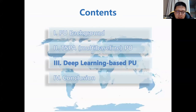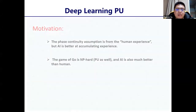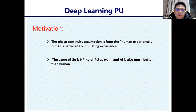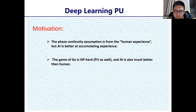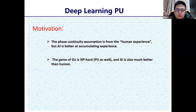Now the second advanced PU technique: deep learning-based phase unwrapping. The motivation is twofold. First, the phase continuity assumption comes from human experience, but AI is better at accumulating experience, so a DL network may provide a better alternative. Second, the game of Go is NP-hard, yet AlphaGo easily beat the world champion — similarly, DL networks may give better solutions for NP-hard phase unwrapping.